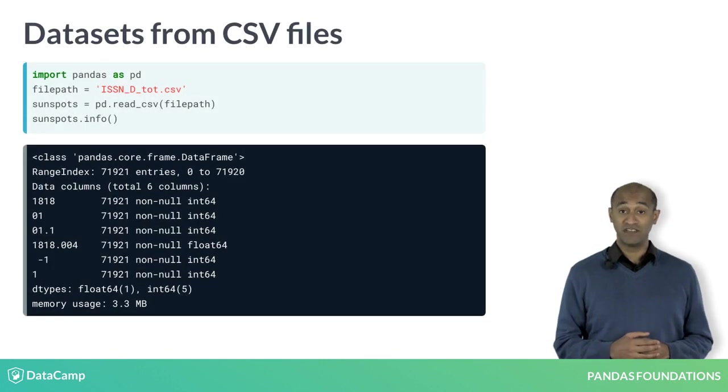The read CSV function requires a string describing a file path as input. We read into a dataframe called sunspots.